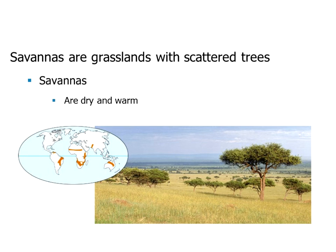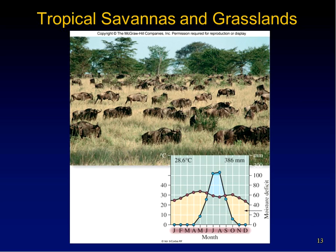So let's look at savannas and grasslands. These tend to be tropical. Savannas are characterized by scattered trees with open areas of grassland underneath. Savannas are typically dry and warm, and you can see where most of the large savanna biomes occur. Tropical savannas and grasslands experience annual drought and rainy seasons and year-round temperatures. Trees tend to be thorny acacias and abundant grazers survive on the grasslands.